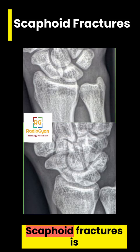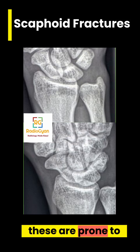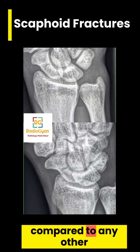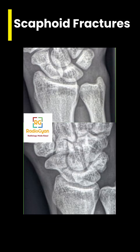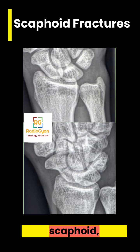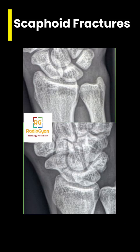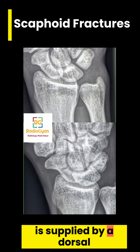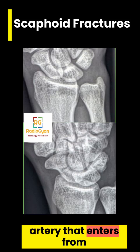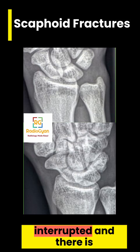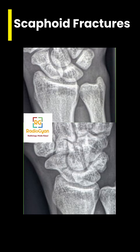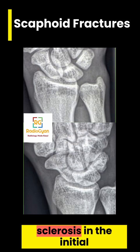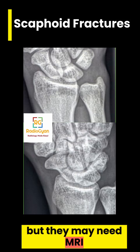The key point about scaphoid fractures is that they are prone to avascular necrosis compared to fractures elsewhere. This is unique to the scaphoid because of its blood supply. The proximal pole of the scaphoid — the larger pole — is supplied by a dorsal branch of the radial artery that enters from the distal aspect. When there is a waist fracture, that artery gets interrupted, resulting in avascular necrosis of the proximal pole. This can be radiographically occult; you may see some sclerosis in the initial stages, but MRI may be needed for diagnosis.